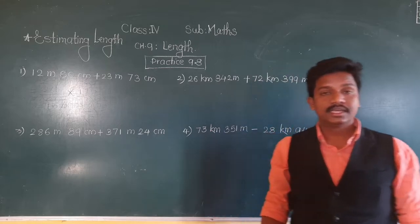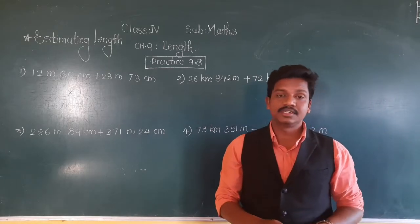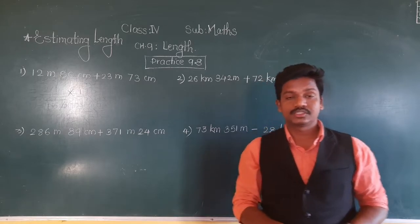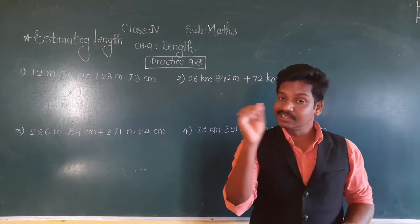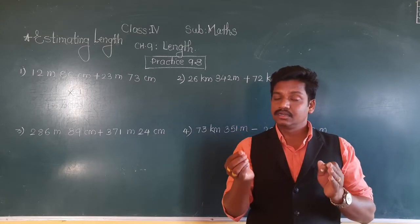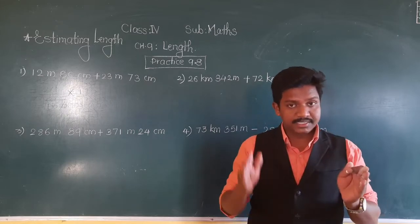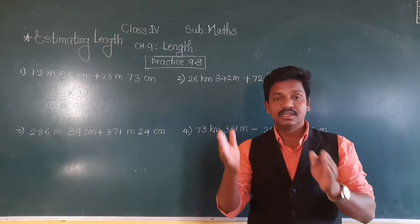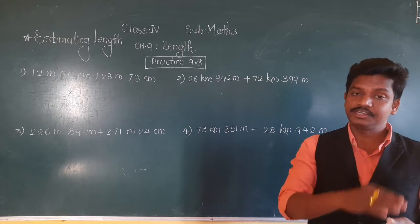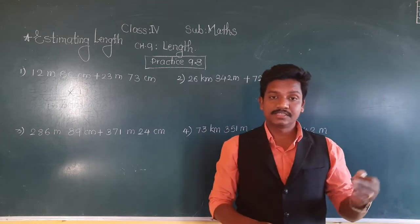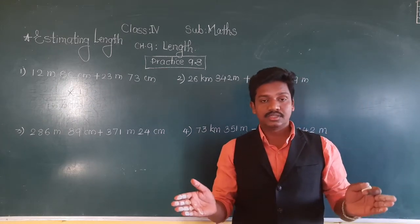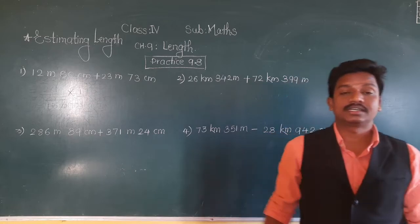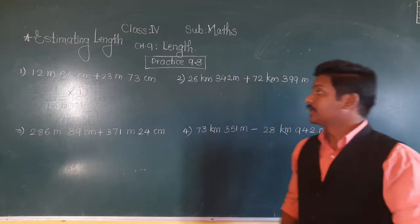Now here we have to round off the length. Many times we see length given in meter and centimeter, or kilometer and meter. If the length is given in meter and centimeter, we convert it into the bigger unit — meter. If the length is given in kilometer and meter, the bigger unit is kilometer, so we round off to the nearest kilometer.